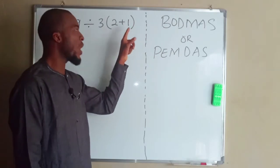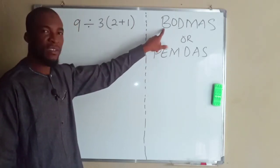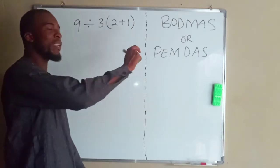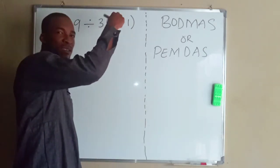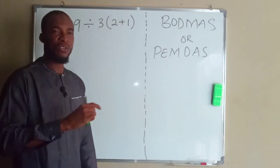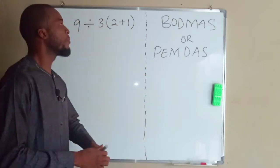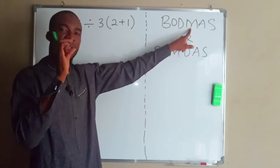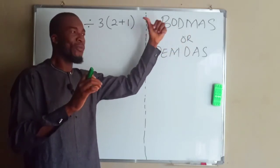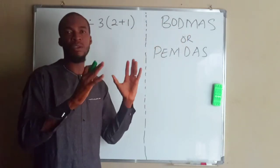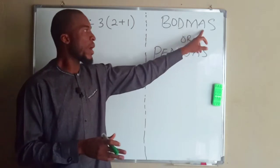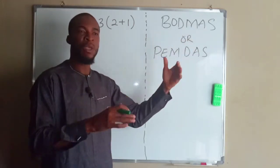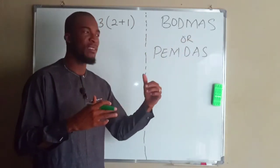Those saying the answer is one didn't understand what bracket means. Bracket means to simplify what is inside the bracket; it does not mean to expand the bracket. Division and multiplication are done simultaneously from left to right, whichever comes first. Same with addition and subtraction - you do them simultaneously starting from the one that comes first.